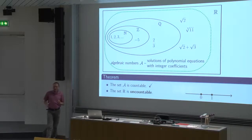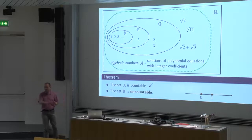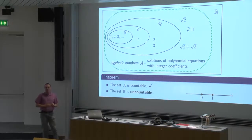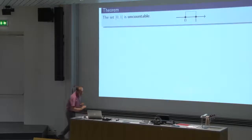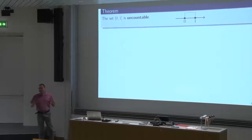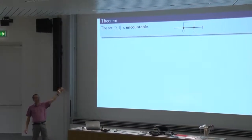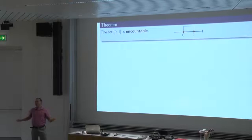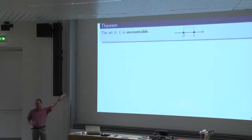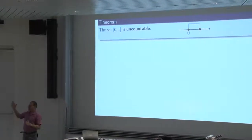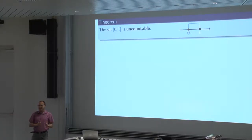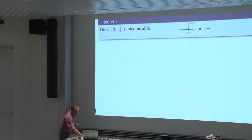The set of real numbers, on the other hand, is uncountable. I'm going to prove now that it is not possible to make an infinite list that contains all the real numbers. So many real numbers — you cannot fit them in an infinite list. Even though your list is allowed to be infinite, you cannot put them all inside.